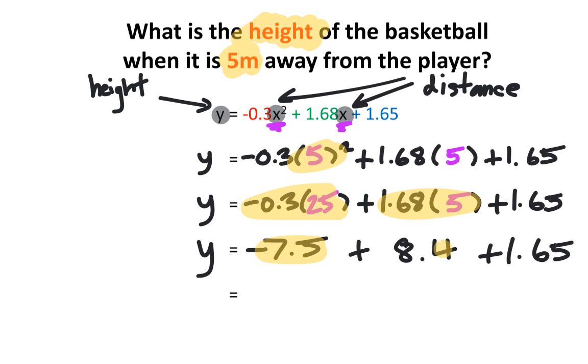Finally, I can combine these three numbers, which is equal to approximately 2.55. Therefore, the height of the basketball when it is 5 meters away from the player is about 2.55 meters, and this is very similar to the number we got when using the graph.